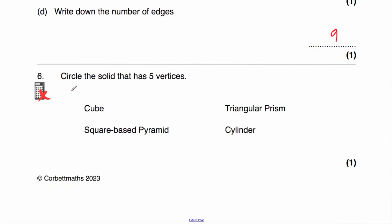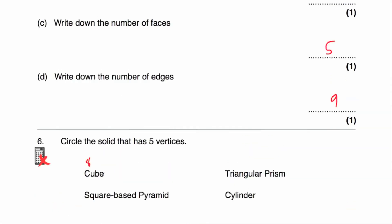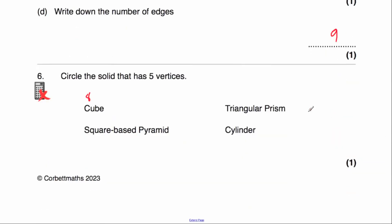Question number 6: we've been given 4 shapes — a cube, a triangular prism, a square-based pyramid, and a cylinder — and we're asked to circle the solid that has 5 vertices. A cube has 8 vertices; a triangular prism has 6 vertices; a square-based pyramid has 4 corners on the bottom plus 1 on the top, giving 5 vertices. So the answer is the square-based pyramid.